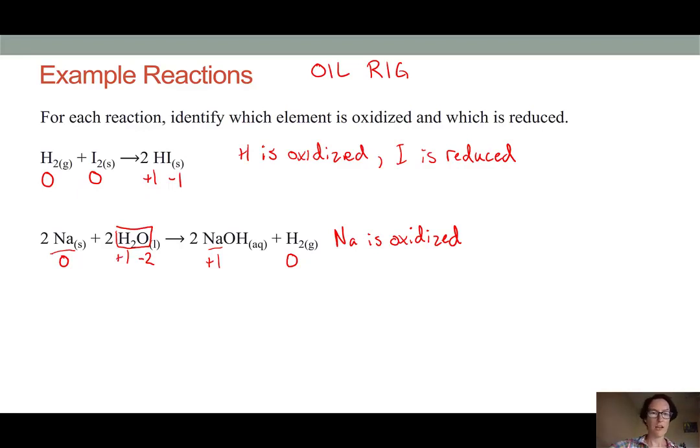So in this reaction, we're seeing some of the hydrogen atoms going from having a +1 to 0. That means they have to gain an electron, and so we can say that the hydrogen is reduced.